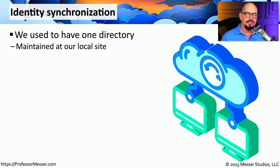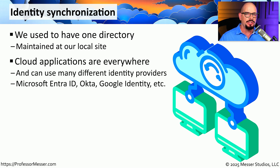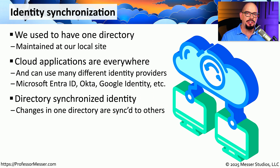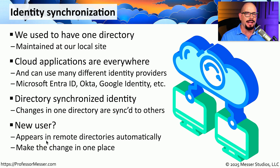Having different people access different cloud services from different locations brings complexity when it comes to identifying who a user is and whether they have access to those resources. Fortunately, there are services in the cloud that provide identity synchronization. Instead of having a single directory stored in your corporate data center, you can have multiple directories stored in many places around the world in different cloud environments. For example, you might be using Microsoft Entra ID, Okta, or Google Identity. Any changes are synchronized across all of those different repositories, so when you make one change to a user's profile, those changes are pushed out to all of the different identity providers. This means we don't have to go from identity provider to identity provider to add a new user or remove somebody — we simply make the change in one place and it's pushed out everywhere.